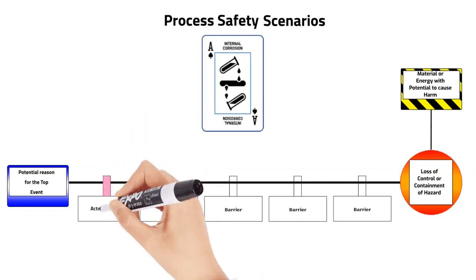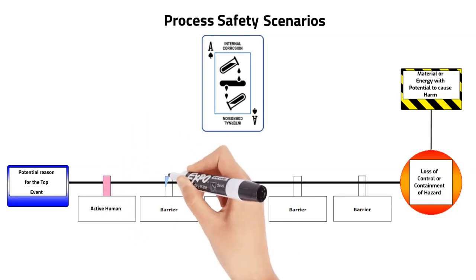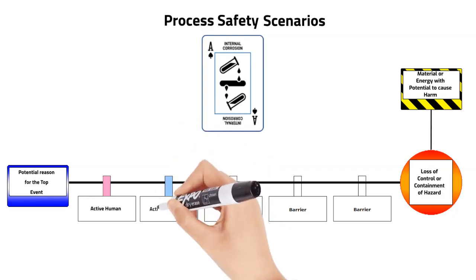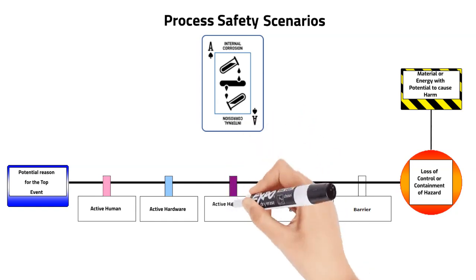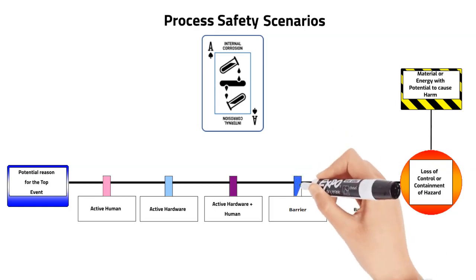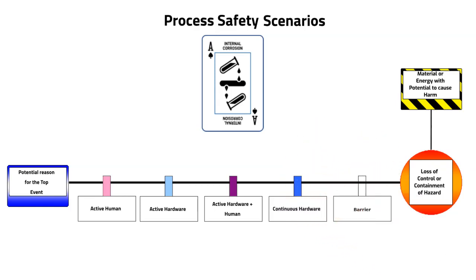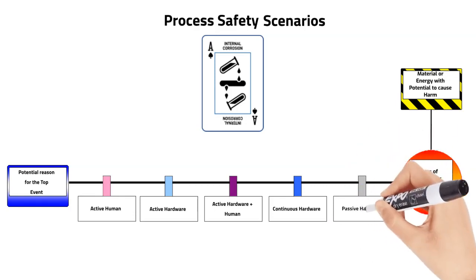Barriers are categorized into different types. Active human barriers are manually performed. Active hardware barriers are executed by technology. Active hardware and human barriers are combinations of human behavior and technological execution. Continuous hardware barriers are always operating. Passive hardware barriers work by virtue of their presence.